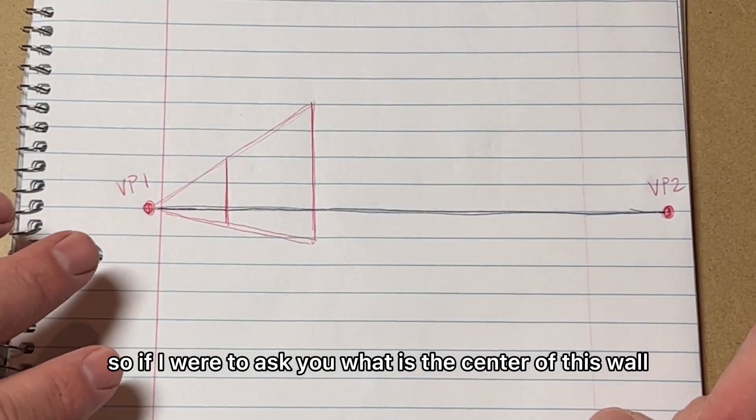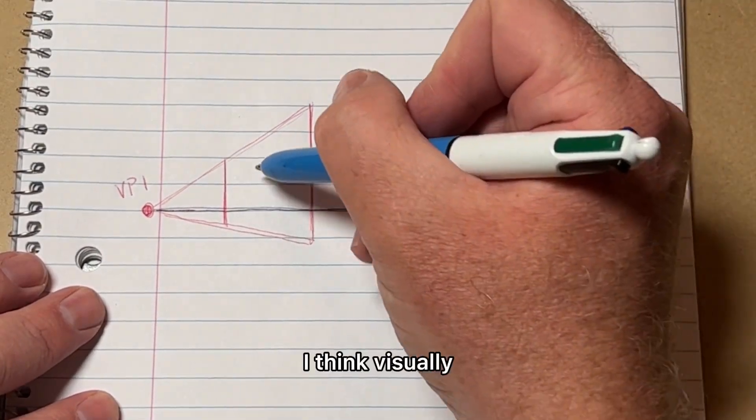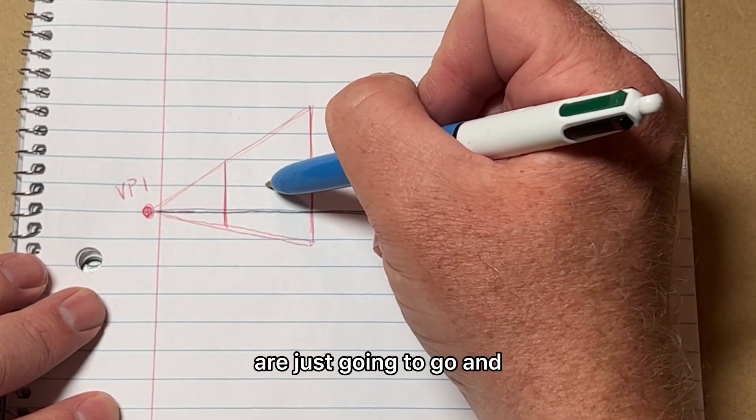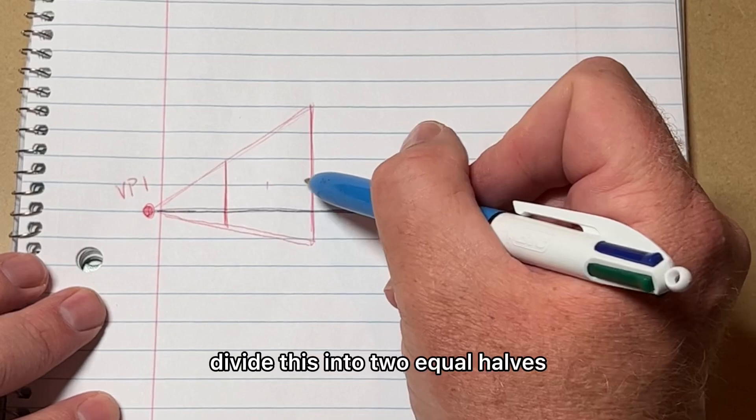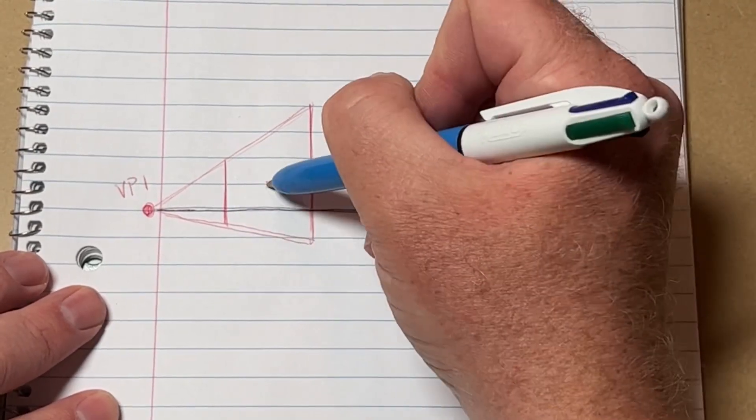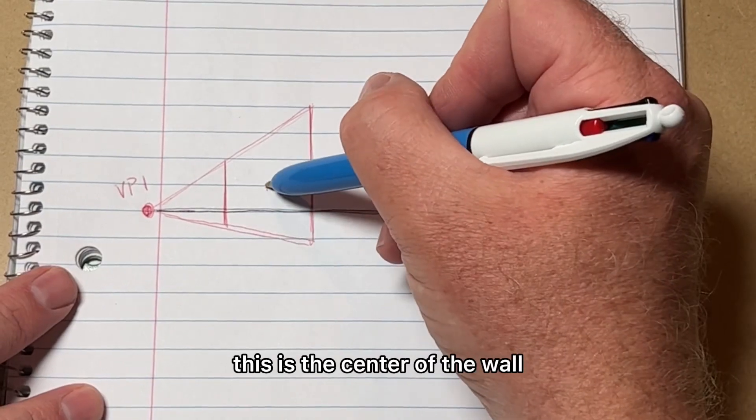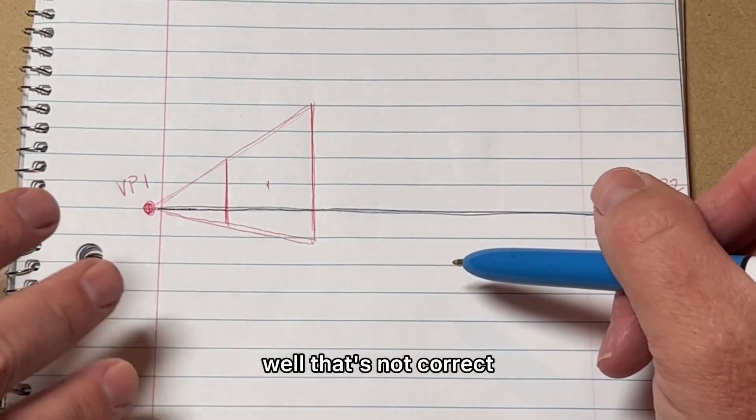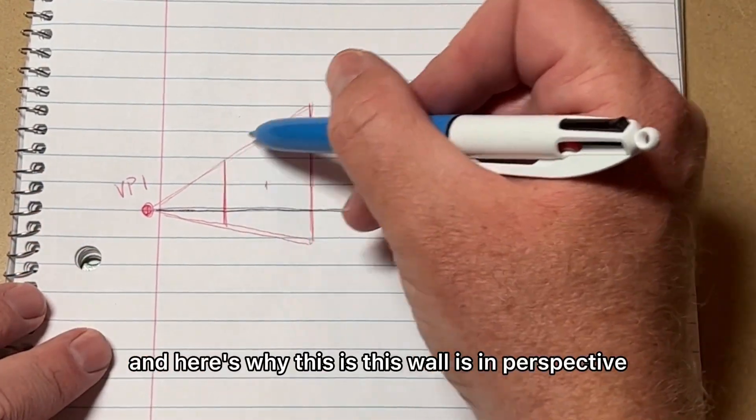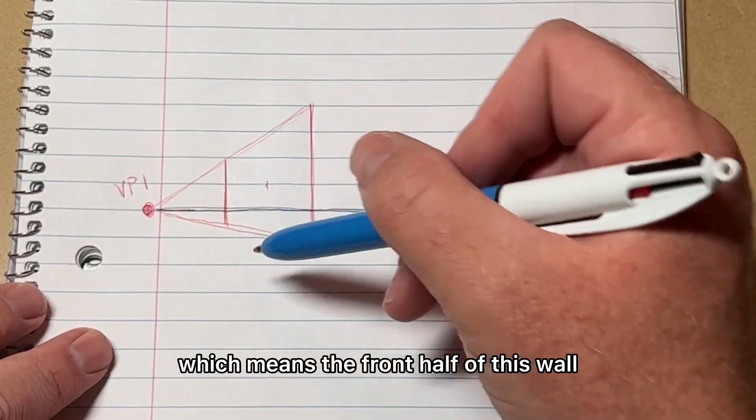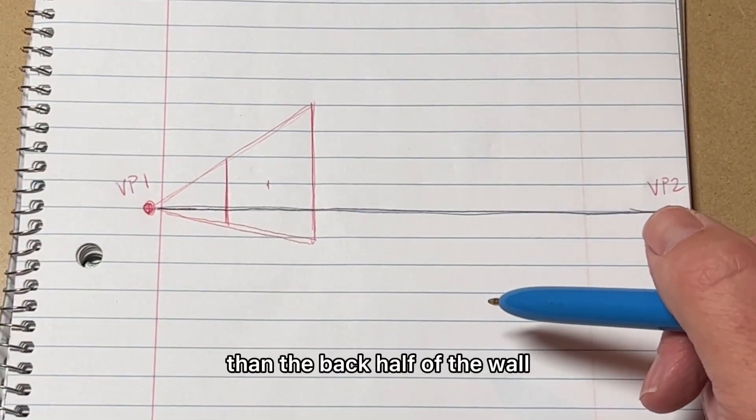If I were to ask you what is the center of this wall, a lot of people would visually divide this into two equal halves and assume that's half of the wall, right? This is the center of the wall. Well, that's not correct, and here's why. This wall is in perspective, which means the front half of this wall is much closer to the viewer than the back half.